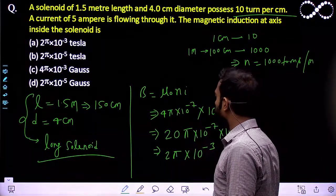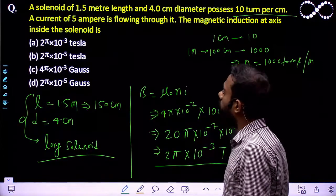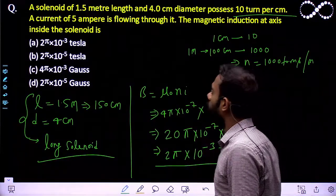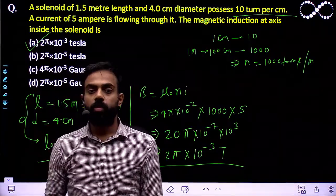Since I am working SI system, the value of B will come in Tesla. 2π × 10⁻³ Tesla is the option. Let us see which option is matching - option A. I hope you understood this question.